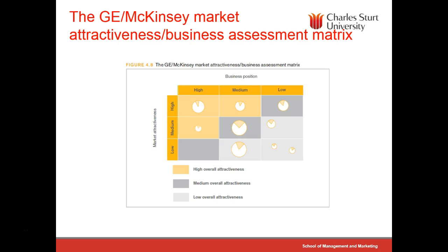Related to the BCG is the General Electric McKinsey market attractiveness matrix. McKinsey is a consultancy company, and General Electric operates across diverse areas including defense, space, and household electrical appliances. In this model, relative market share and a range of market attractiveness and business position criteria are scored by managers. The matrix talks about high, medium, and low overall levels — the lower areas are those you probably would not want to compete in. Both the GE McKinsey and BCG models are really about where to focus your competitive efforts.